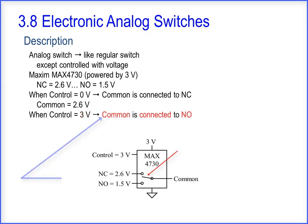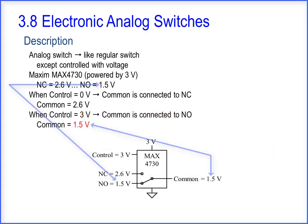When control equals 3 volts, common is connected to NO. Common equals 1.5 volts.